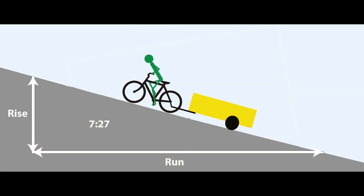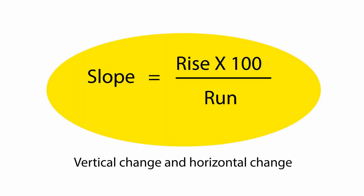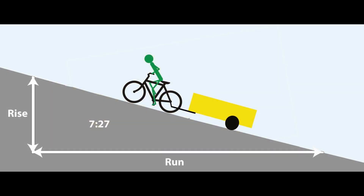That percentage is the ratio of how far you've traveled — the run — and how high you've climbed — the rise. For every 27 meters that this bicycle traveled on that hill, it gains 7 meters in height. A simple formula for calculating the slope is to multiply the rise by 100 and divide the product by the run. For this example, it works out to 26%, a grade that you'd never see on a public road.